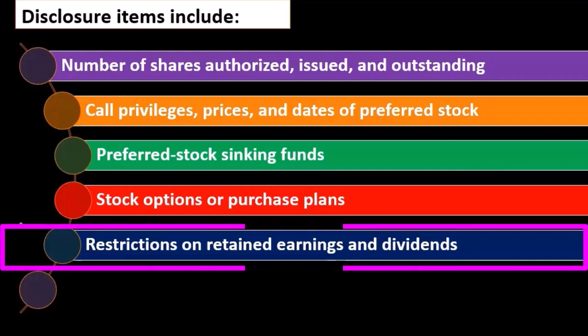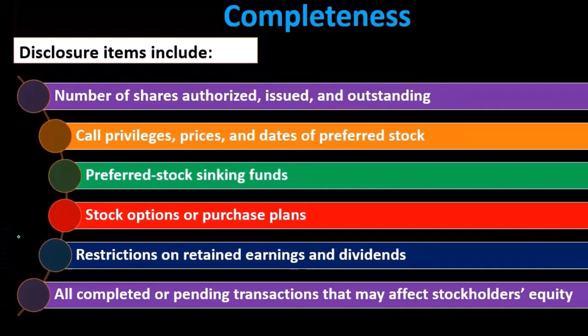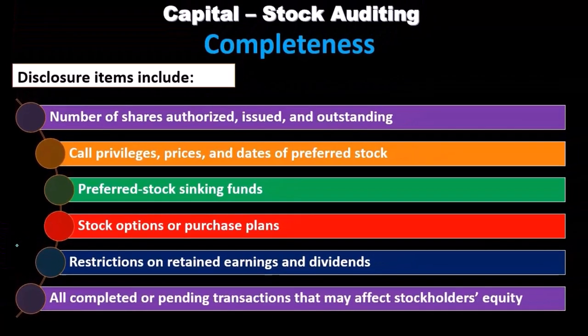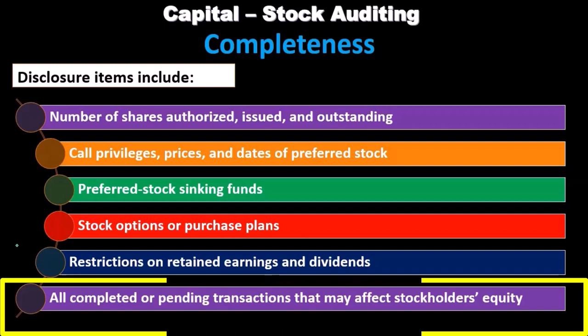Restrictions on retained earnings and dividends need to be disclosed if any exist. Also, all completed or pending transactions that may have a direct effect on stockholders' equity should be disclosed.